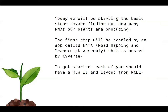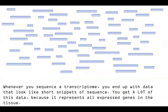So we're going to be figuring out how many RNAs these plants are going to be producing using the app called RMTA, or Read Mapping and Transcript Assembly, hosted by Cyverse. We can consider a transcriptome experiment where we sequence all of the transcripts that are going to come from a particular organism at a particular time — maybe a developmental stage, maybe some type of environmental stress, a pathogen — and we're going to end up with a lot of data, because this represents all of the expressed genes in that tissue.